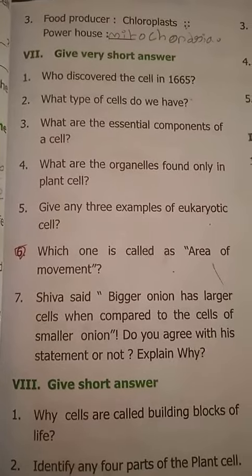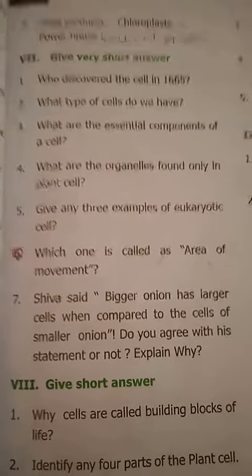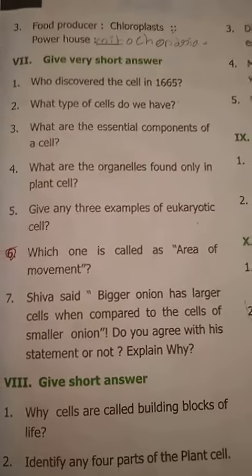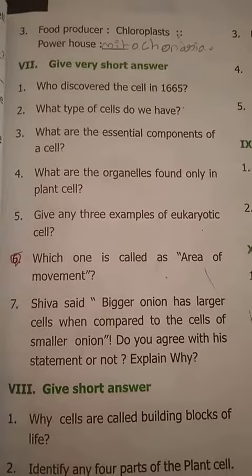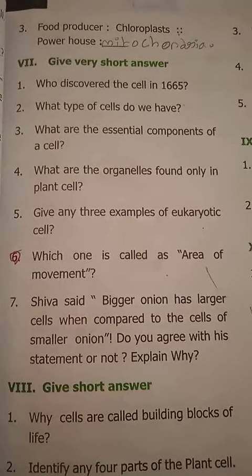What types of cells do we have? Two types of cells: one is eukaryotic cell, another is prokaryotic cell.